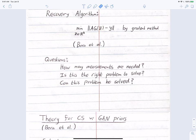A final question is whether this problem can even be solved. This is a non-convex optimization problem because g(z) is typically a neural network, which is non-convex, so it's not obvious that running a gradient method would find the optimizer. We'll discuss guarantees that can be made in certain cases.